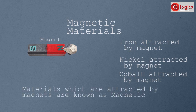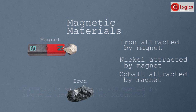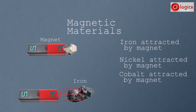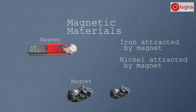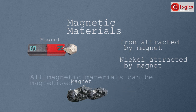Materials which are attracted by a magnet are known as magnetic materials. Let's take iron — it is a magnetic material. This piece of iron can become a magnet after an induction process; now this acts as a magnet. All magnetic materials can be magnetized.